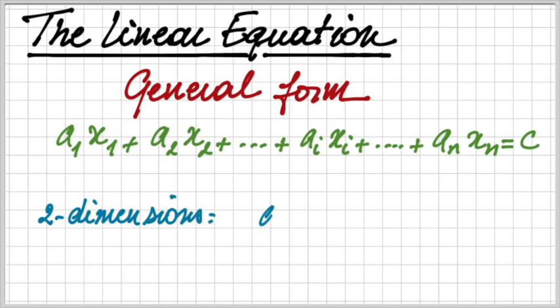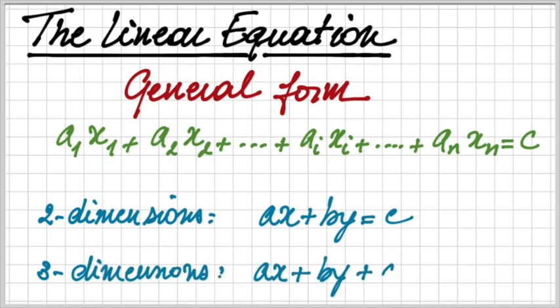Now, when we look at a two-dimensional linear equation, we can say typically, or we write it typically, as ax plus by is equal to c, and when we have a three-dimensional, we have ax plus by plus cz is equal to d. Typically, we're going to use two-dimensional linear equations because that's the equation of a line, and we can easily represent that in an x and y Cartesian system.